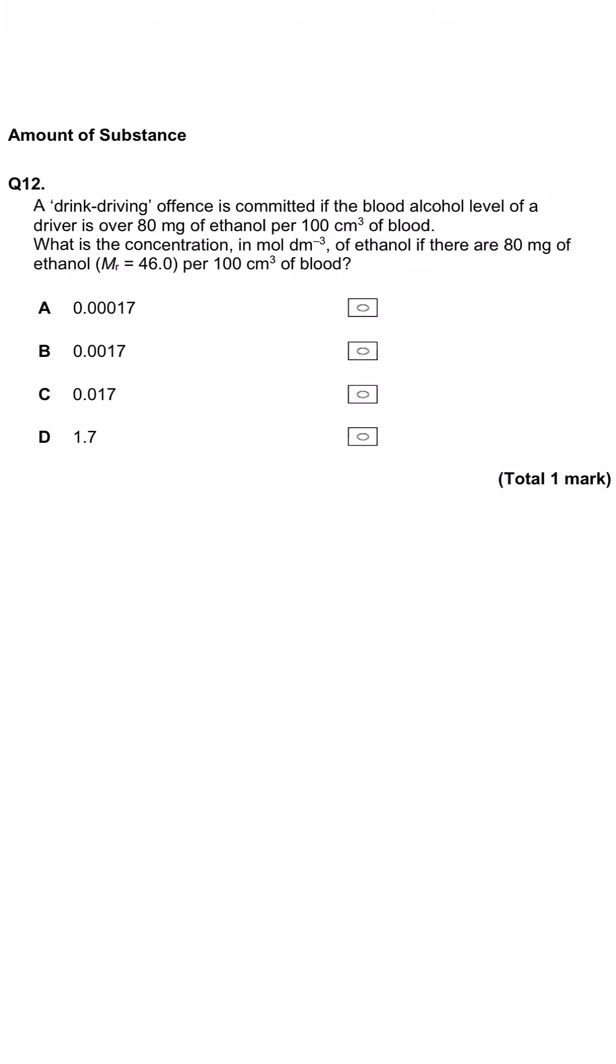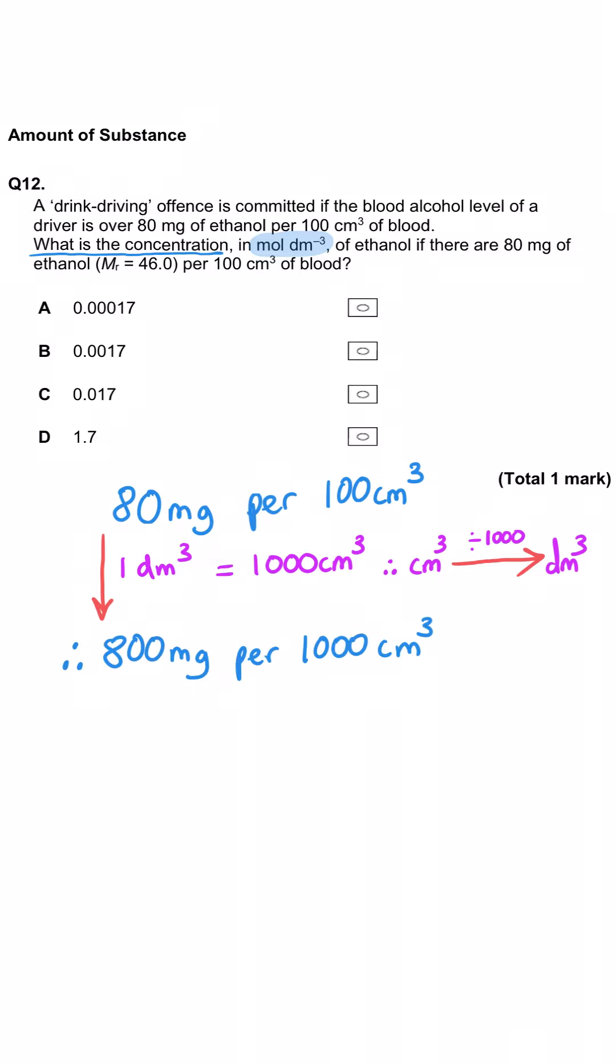Here we're told that a drink driving offence is committed if the blood alcohol level is over 80 milligrams of ethanol per 100 cm cubed of blood. We've been asked what this concentration is in moles per decimetre cubed if there is precisely 80 milligrams of ethanol per 100 cm cubed of blood. First we need to convert 100 cm cubed into dm cubed using the fact that there are 1000 cm cubed in 1 dm cubed. So there would be 800 milligrams in 1000 cm cubed of blood or 1 dm cubed.